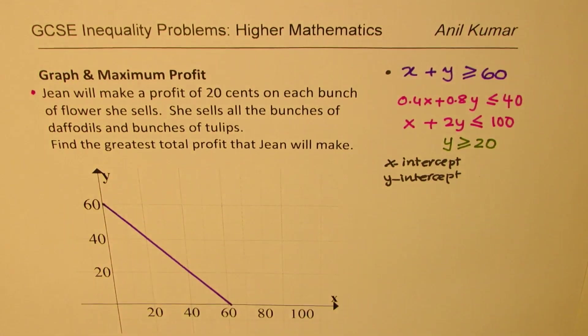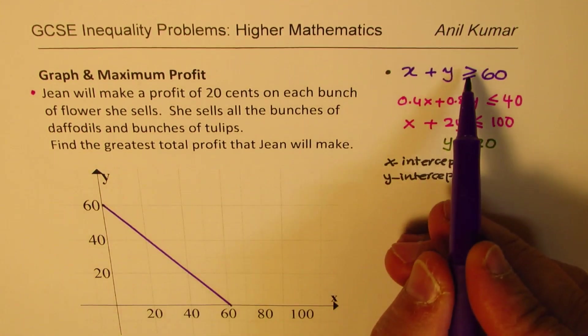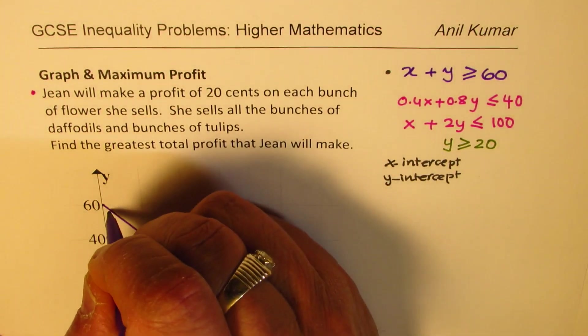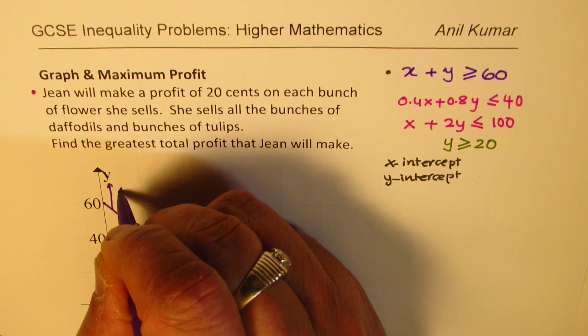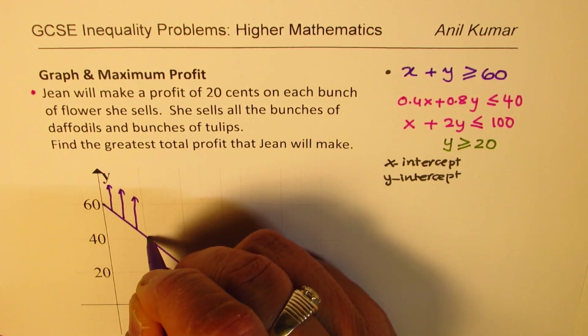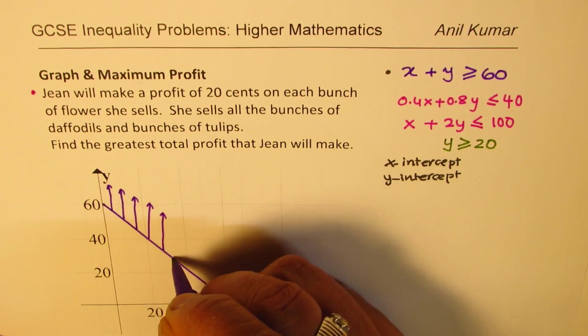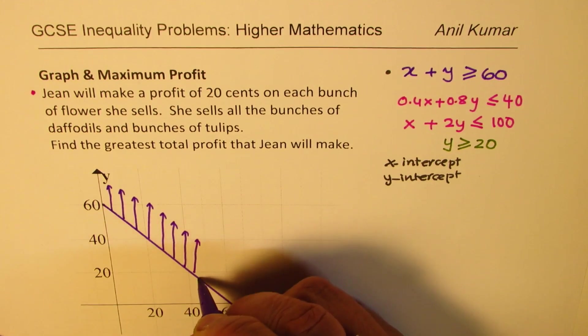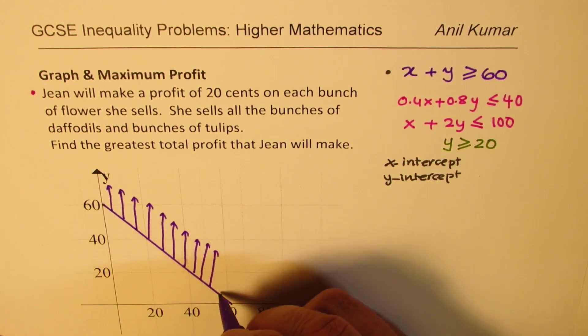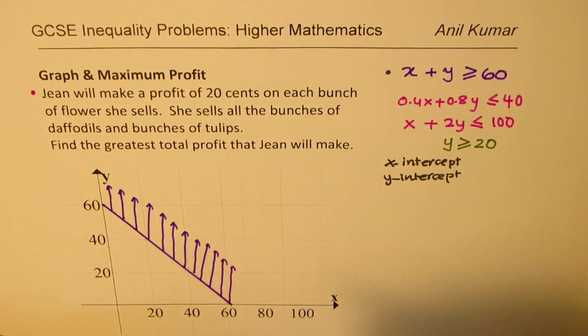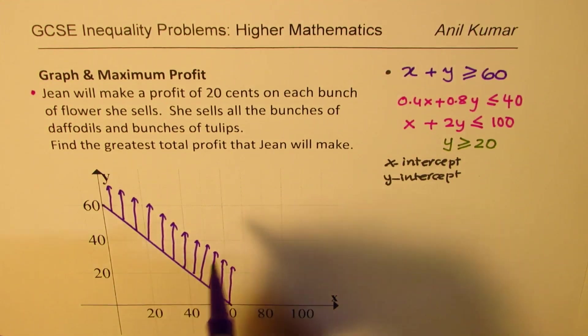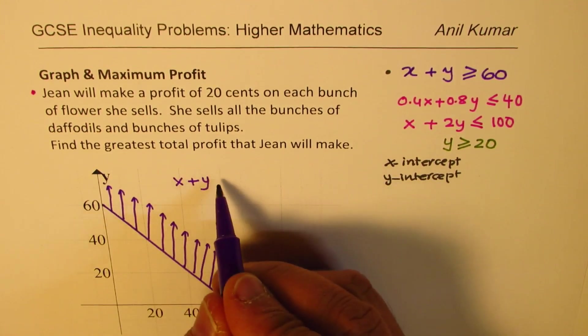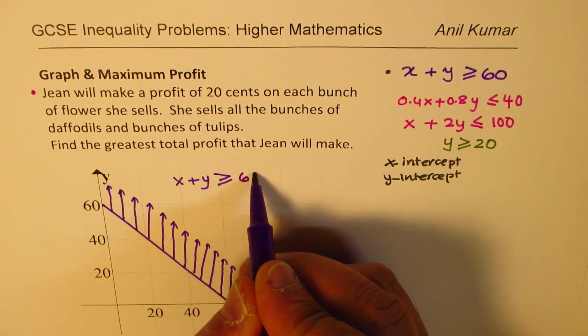So whenever we draw a line it is for equal to. Now the sign is greater than equal to. So when we say greater than equal to means above. So that is greater than equal to. So initially we have sketched X plus Y. And then we made it greater than equal to 60.